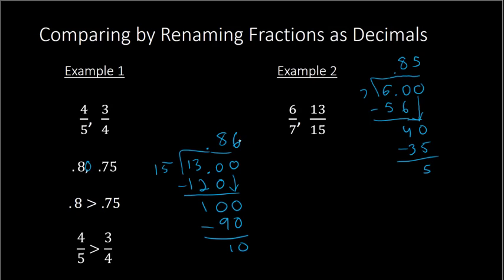But notice what we have, we have 0.86 and 0.85. So 0.86 is clearly bigger, and 0.86 corresponded with the 13 over 15. So 13 over 15 is bigger, or in other words, 6 over 7 is smaller. 6 sevenths is less than 13 over 15. This is how we can compare fractions by renaming as a decimal.